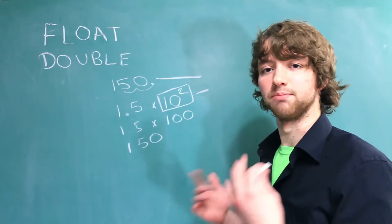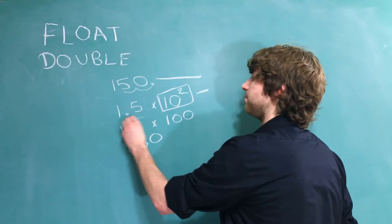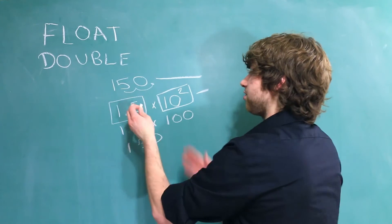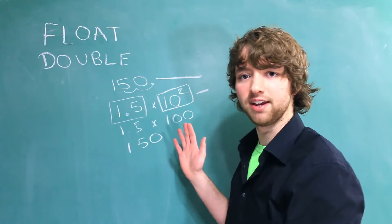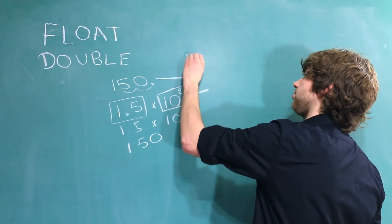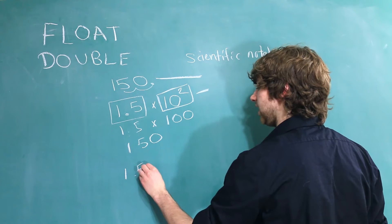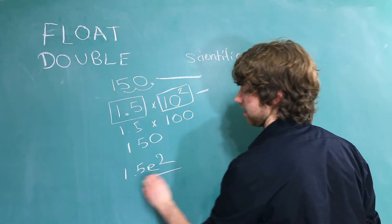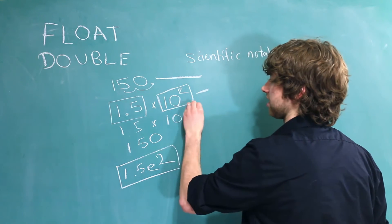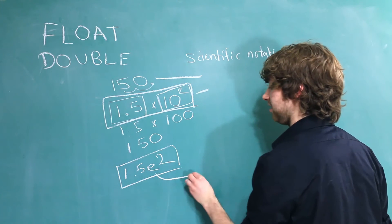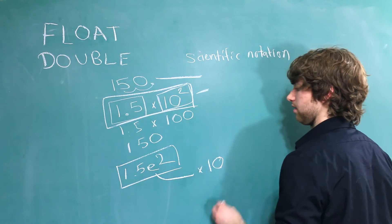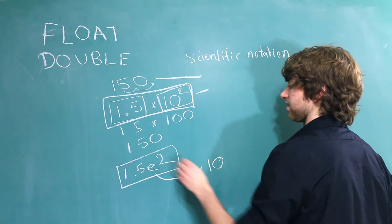Essentially, with this data type behind the scenes, we are going to store some number and then store what we are going to multiply it by. This is known as scientific notation. Another way to present this would be 1.5e2. That's just another representation of this same thing here. This e means times 10. So 1.5 times 10 to the second power.